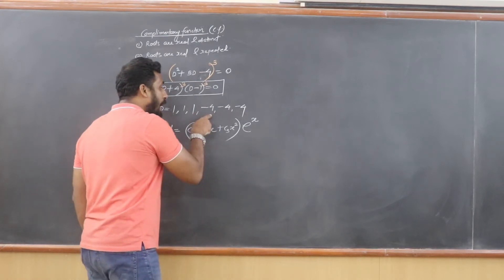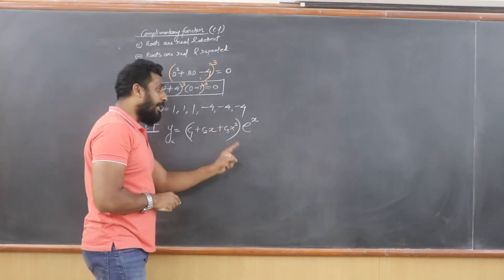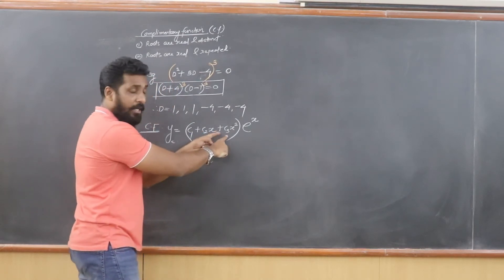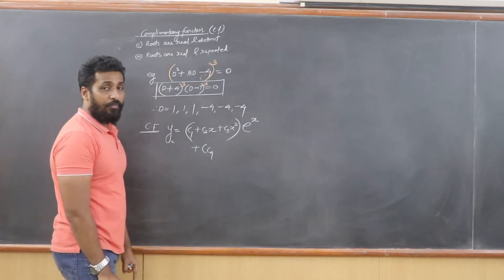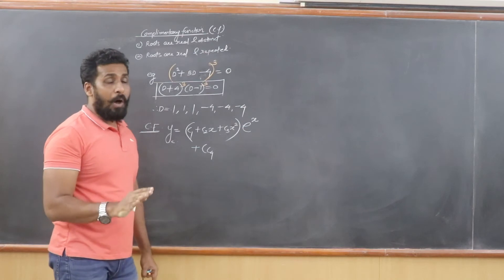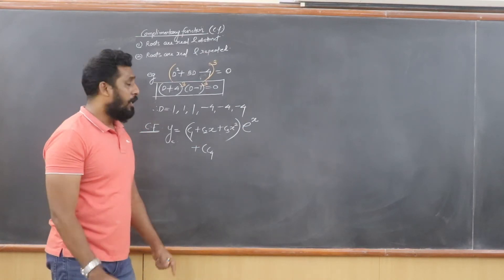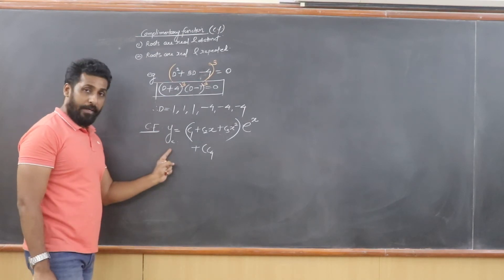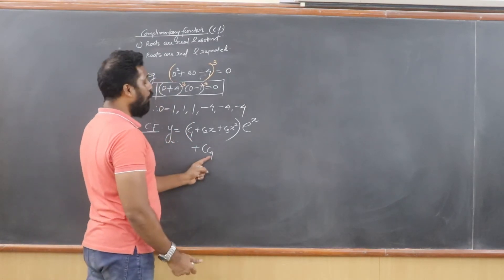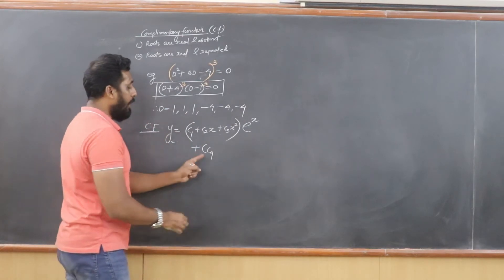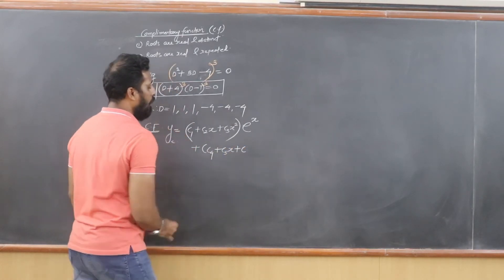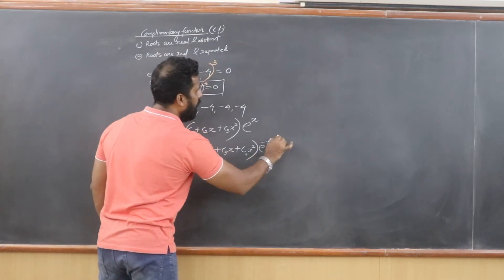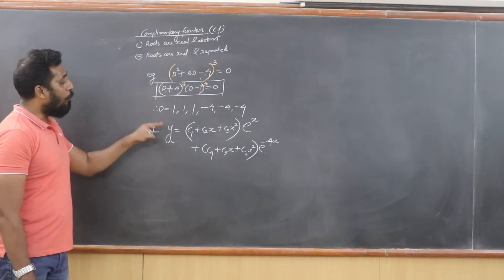The next repeating root is -4, which goes into the power of the exponential term as e^(-4x). Since -4 repeats 3 times and I have already used c1 to c3, I continue from c4. So I write + (c4 + c5·x + c6·x²)e^(-4x). The power of d was 6, so 6 constants must appear in the complementary function.